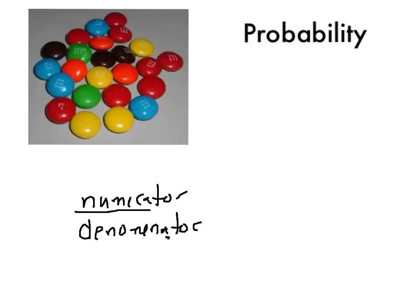So when we're talking about probability, our numerator is going to be what we're counting. So for instance, maybe we want to know what's the chances of getting a yellow M&M. So our numerator is going to be how many yellow. And our denominator is going to be the total amount of M&Ms in that bag, or for our purposes here on the counter. So our total is going to be the denominator.